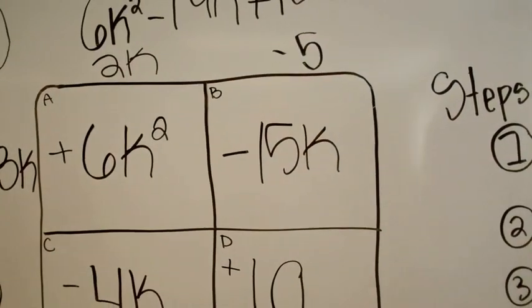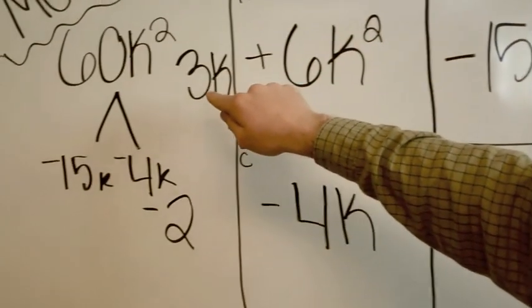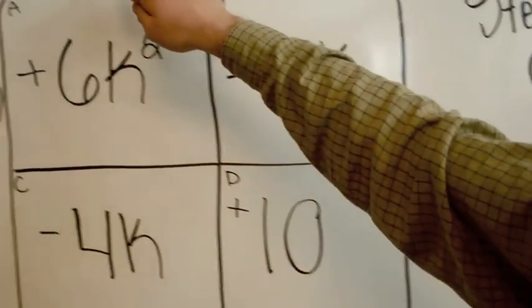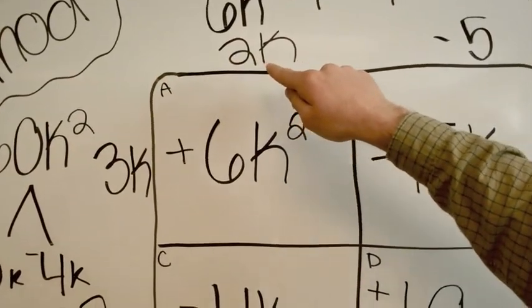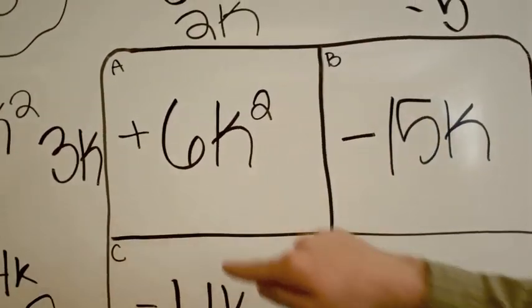Note here, guys. You need a negative 5 instead of a positive 5 here, because negative 5 times positive 3K equals negative 15K. And here we need a positive 2K versus a negative 2K, because 2K times 3K equals 6K squared.